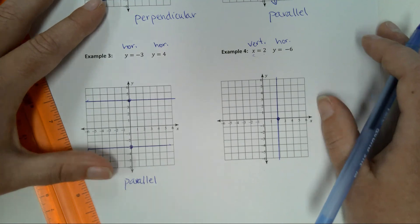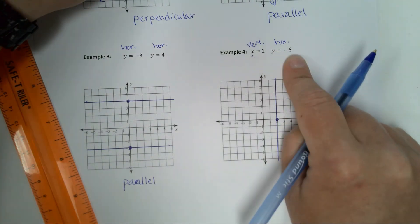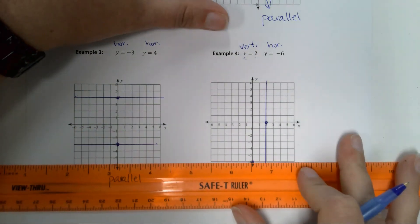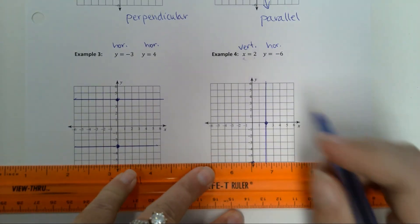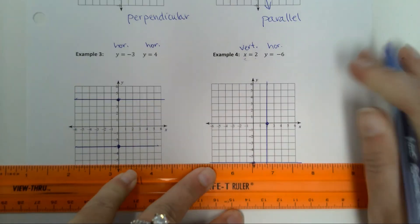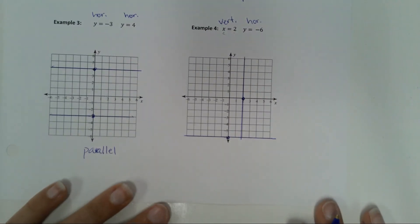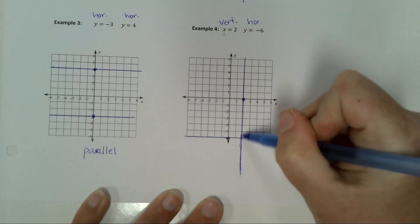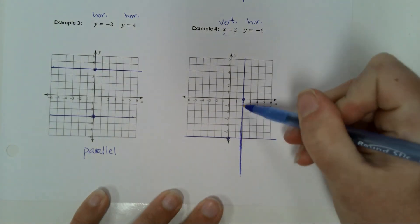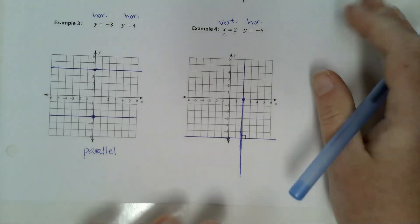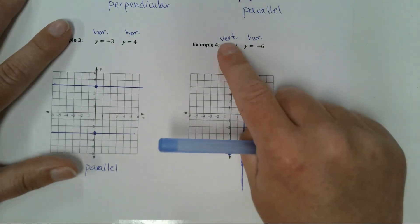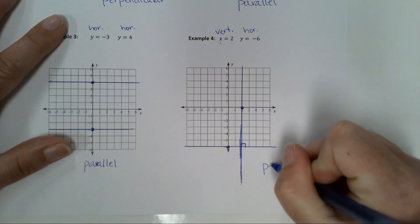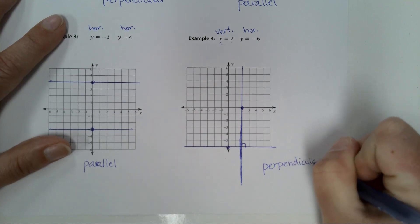For the second one, I'm going to my y-axis to negative 6. That would be all the way down here. And I'm drawing a horizontal line. Now, it's kind of hard to tell here about these lines because they just barely cross. But what if I extend this down? That kind of helps me visualize it a little bit more. Does this look like a right angle here? It most definitely is. And remember, we talked about this yesterday. If one of them is vertical and one of them is horizontal, they're always going to be perpendicular. So, these are perpendicular.